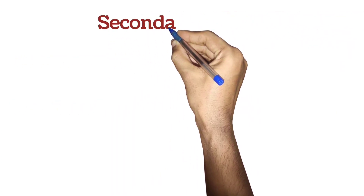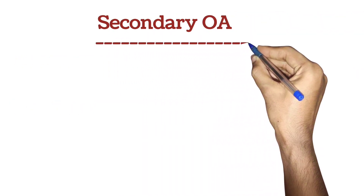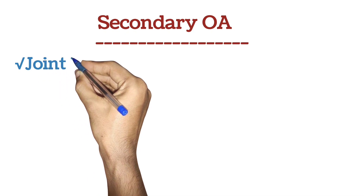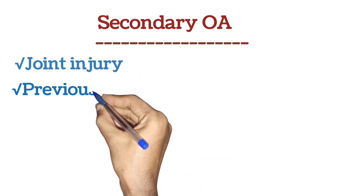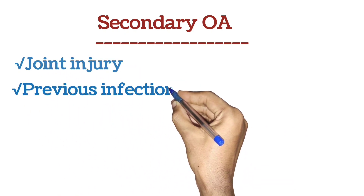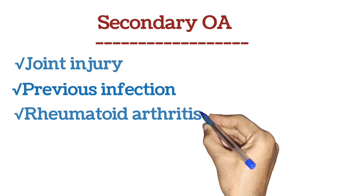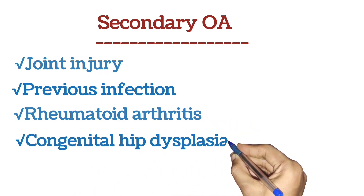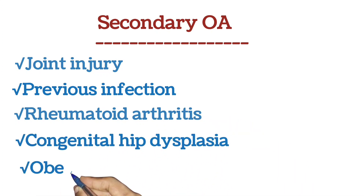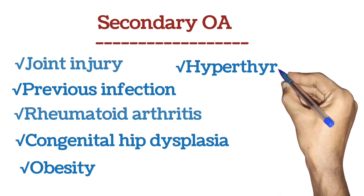Secondary OA is caused by a predisposing factor such as joint injury, previous infection, rheumatoid arthritis (RA), congenital hip dysplasia (CDH), joint deformity, obesity, hyperthyroidism, or other underlying conditions.